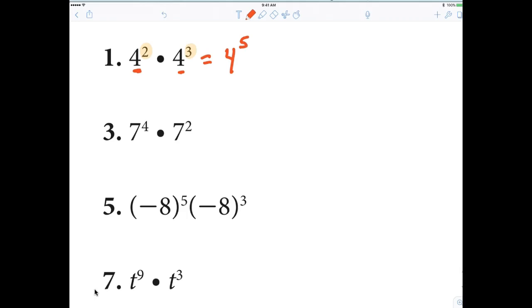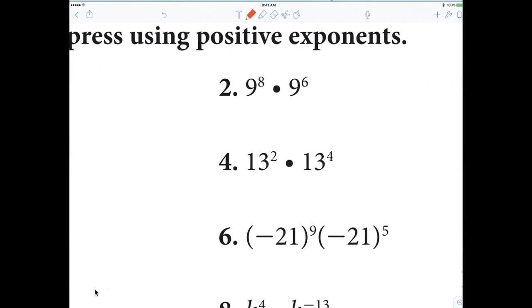Now, because you got that to be 4 to the 5th, now we're going to talk about number 2. Alright. 9 to the 8th times 9 to the 6th. Alright. What is that? 9 to the 14th. Very good. 9 to the 14th. Alright. Again, the base stays the same. The base stays the same. Then you add the exponents.